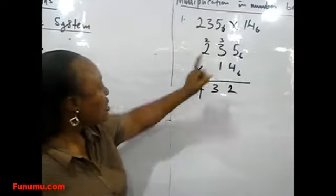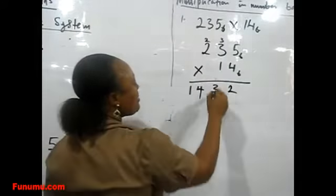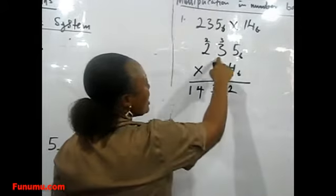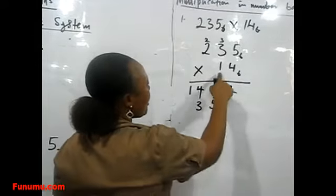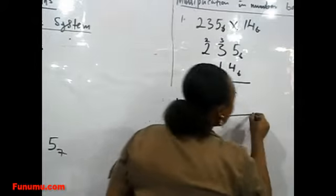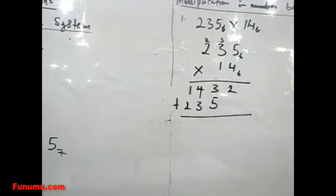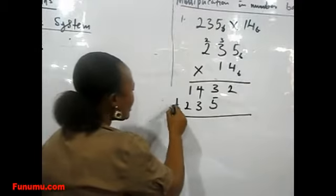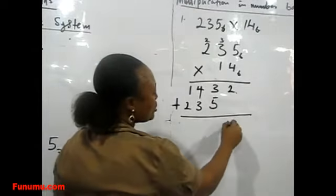Now we use the second digit. 1 times 5 is 5, 1 times 3 is 3, and 1 times 2 is 2. After multiplication, we use the law of addition. So let's add this. 2 plus nothing is 2.